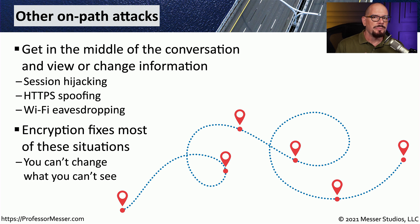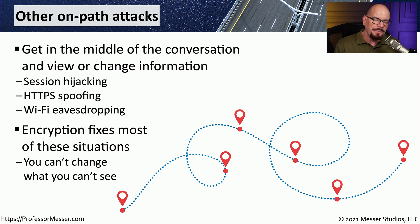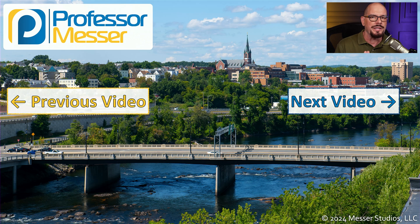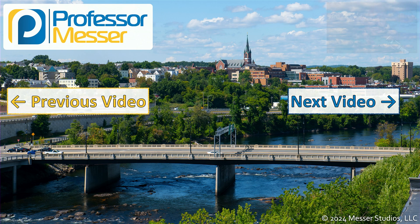As a general rule, you can prevent a lot of the damage caused by an on-path attack by simply encrypting all of the data. Even if somebody sits in the middle of the conversation, they would have no idea what information is being transferred between two devices.